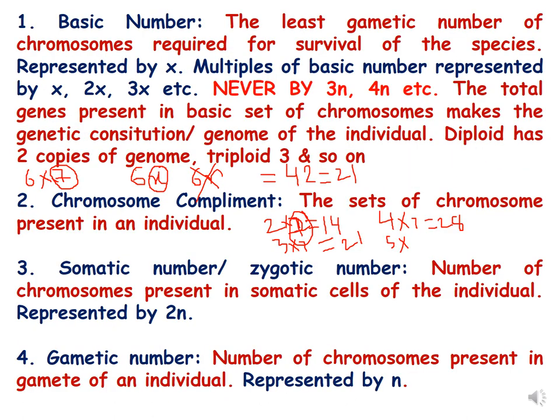There are some terms we will discuss that you will encounter in this unit. The first is basic number: the basic number is the least genomic number of chromosomes required for the survival of the species, and it is represented by x. For example, suppose there is a species which has 7 chromosomes, and there are different species belonging to hexaploid, diploid, and tetraploid, but 7 remains constant during the course of evolution. So 7 is the basic number, and the total genes present in the basic set of chromosomes makes the genetic constitution or genome of the individual.